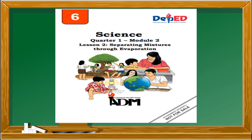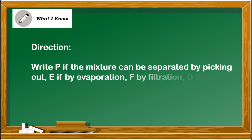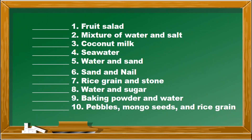After going through this module, you are expected to separate mixtures through decantation. Get ready, children, with your science module, your paper, and your ball pen. Before we start with our lesson, we should say thank you to all the people who share knowledge and talent. For the 'What I Know' section, you are going to answer questions. P for picking — the mixture can be separated by picking, or by using your hand. E for evaporation, F for filtration, D for decantation, and M for magnet.